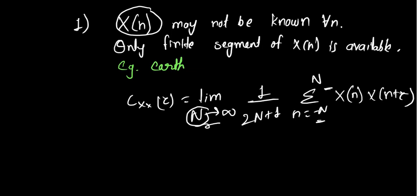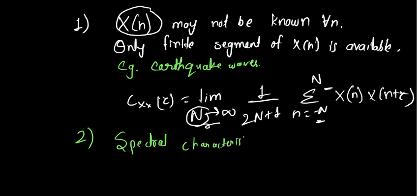The second problem is that the spectral characteristics may change over time. WSS is a theoretical assumption, but in practicality it is not possible that if you will see after 10 years the same process, it will be having the same mean. The spectral characteristics may change over time, especially when we are collecting the data, when we are observing this X(n).